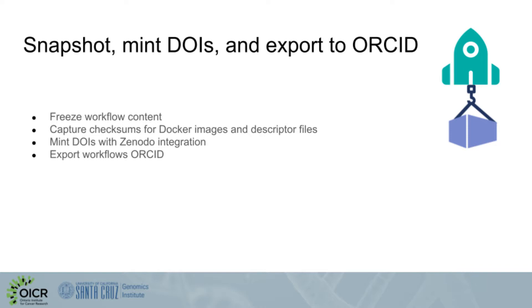The next series of features allows you to snapshot workflows into DOIs for them and export them to your ORCID account. The idea behind these features is to improve the reproducibility of your workflows. By freezing your workflow content, you ensure that your workflow will not change between you deciding to freeze it and that workflow getting launched on one of our launch with partners. The idea is that we capture checksums for the Docker images that are referenced by your workflow and for the descriptor files themselves. This information is now available for our launch with partners, allowing them to verify whether that workflow has actually changed.